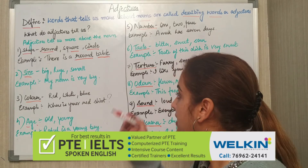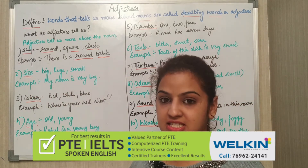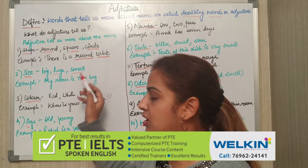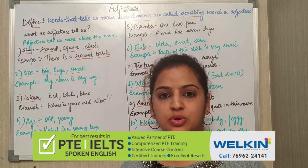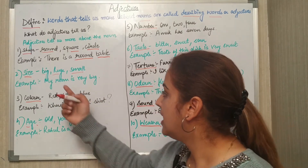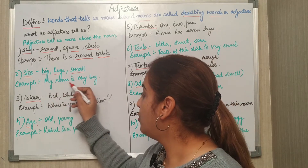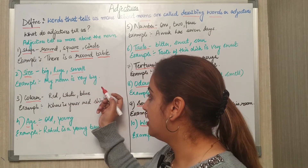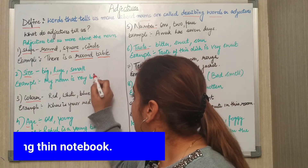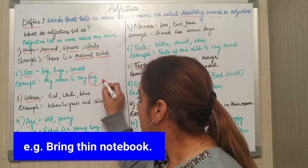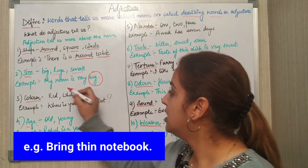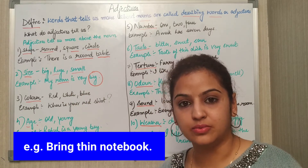Next is size. Size could be big, huge, small, large, medium — anything. Example: My room is very big. Now in this sentence 'big' is an adjective and 'room' is a noun.